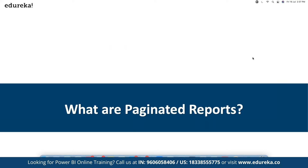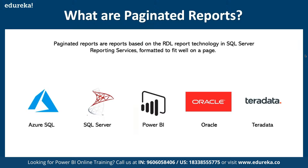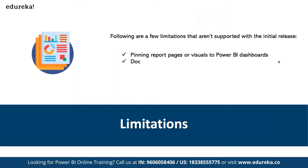Paginated reports are basically based on the RDL report technology from SQL Server, used as part of reporting services, and are formatted to fit well on a page. We can have multiple data sources like Azure SQL, SQL Server, and Power BI. There are certain limitations — for example, you cannot pin paginated reports to a Power BI dashboard, document maps and drill-through reports are not available, and shared data sources and shared datasets are also limited.